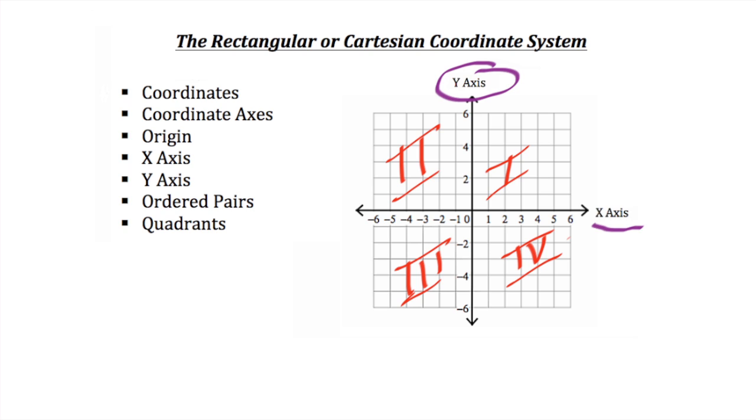In quadrant 1, both the x-coordinate and y-coordinate are positive. In quadrant 2, x is negative, y is positive. In quadrant 3, both x and y are negative. In quadrant 4, x is positive, and y is negative.